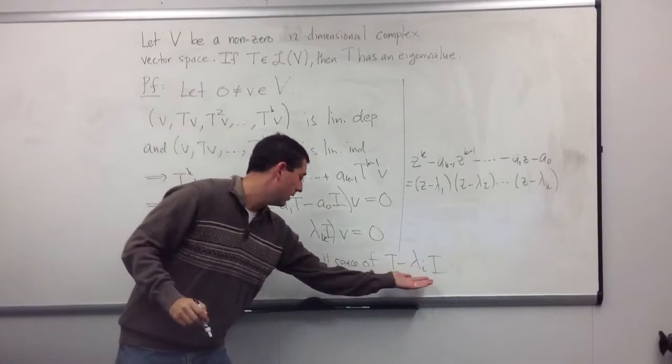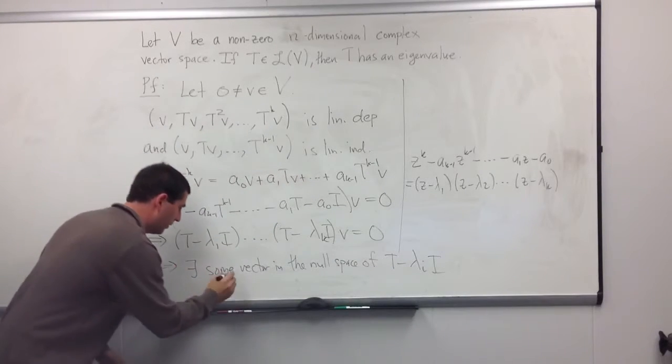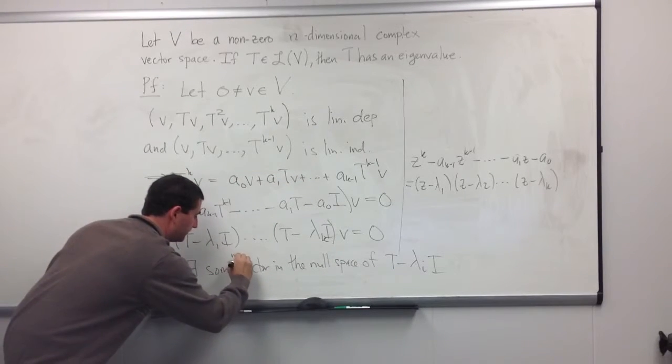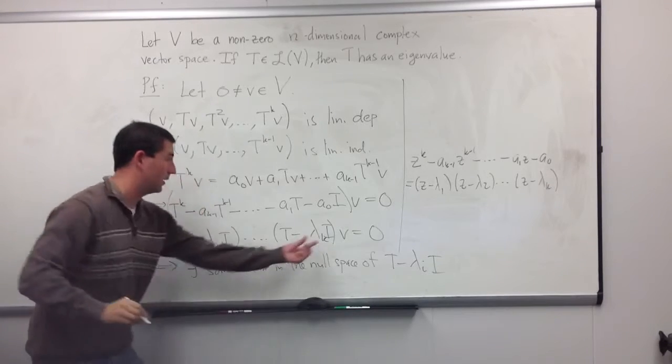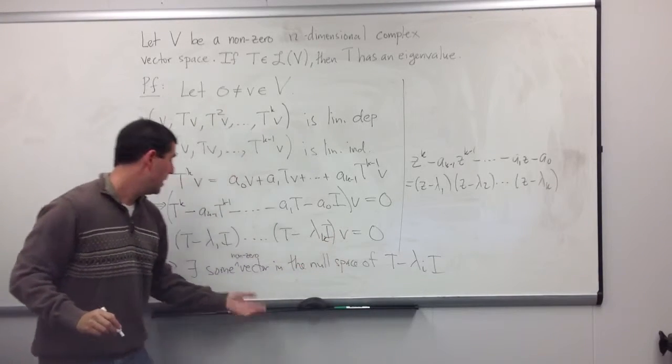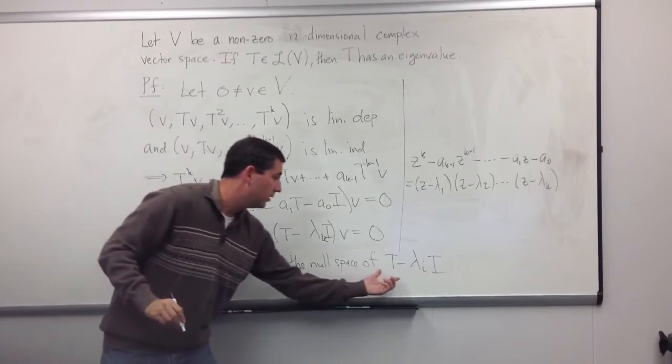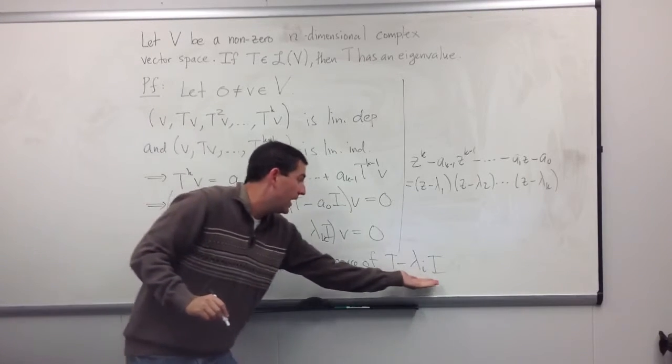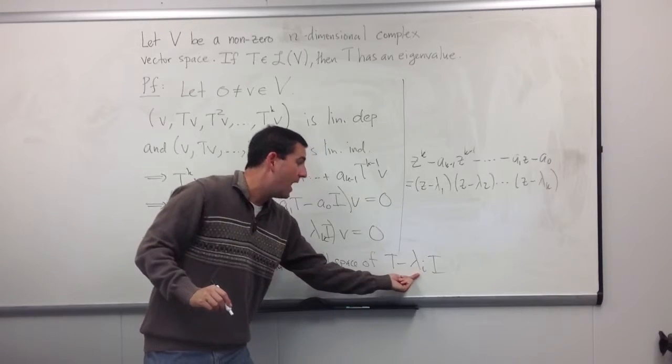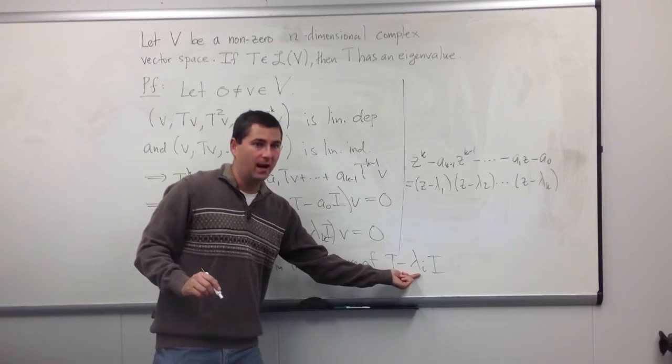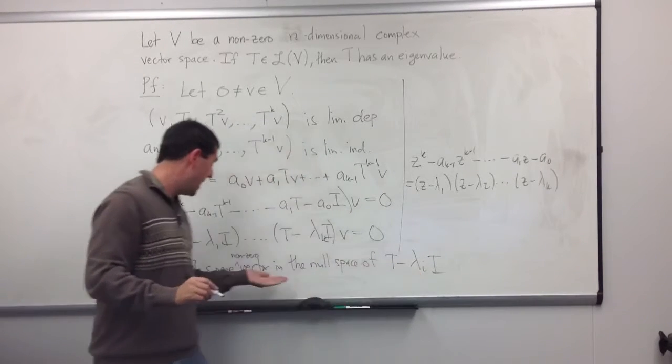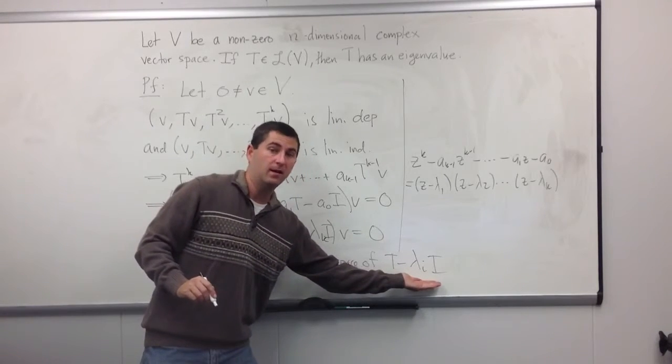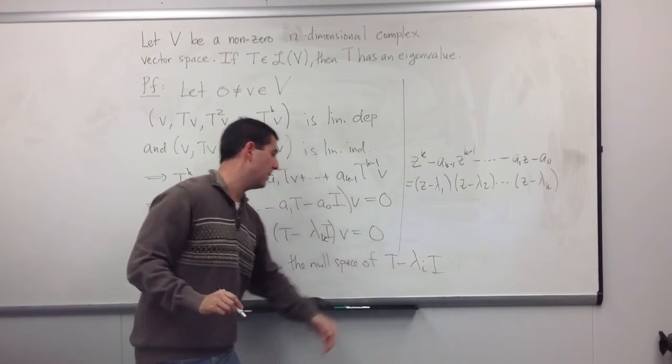I don't know which. So, let's just call it T - λᵢI. What does it mean to have a vector, and it's really a non-zero vector? So, let's say non-zero, because we're starting with something non-zero. So, we have some non-zero vector in the null space of T - λᵢI. That means that we have an eigenvalue.